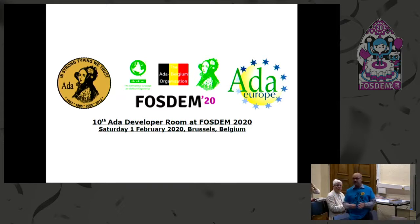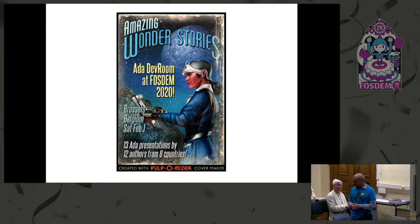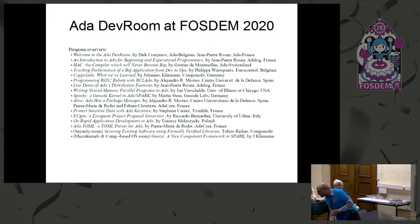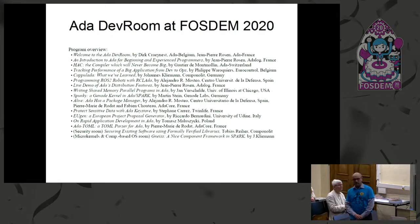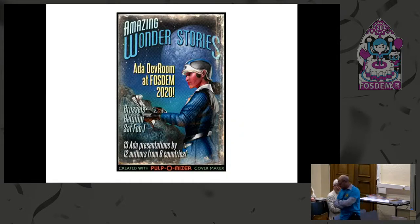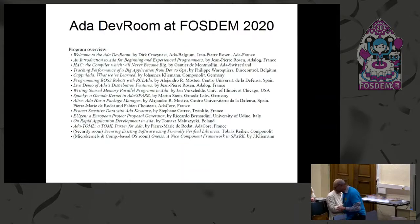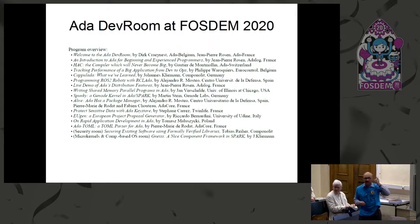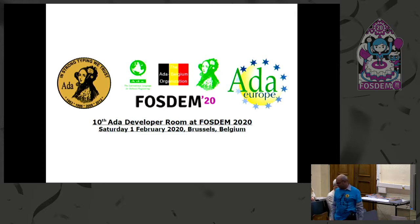Ada Europe is the federation of all national Ada organizations, and it organizes a yearly conference — this year it's in September, the week of 8th of June. It's a place where you can meet people from the Ada world, from all over the world, Europe mainly but not only. There are also very interesting technical papers. There is a call for work in progress — small papers you can submit very late, until March 31st. If you are doing something interesting with Ada but it's not yet completed and you want it to be known, you are welcome to submit it. Just go to adaeurope.org and you will find all the details there.